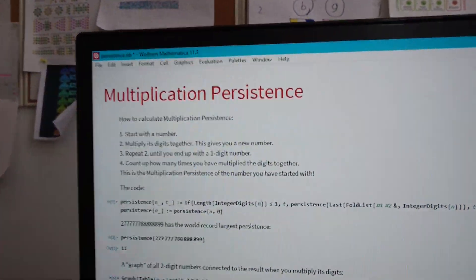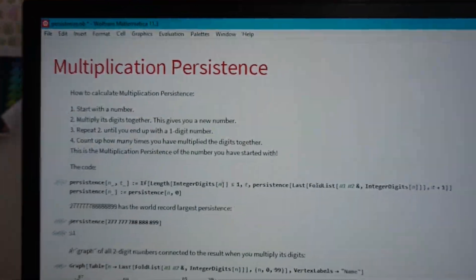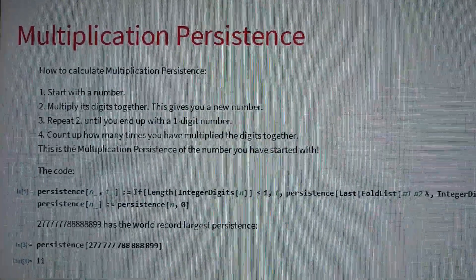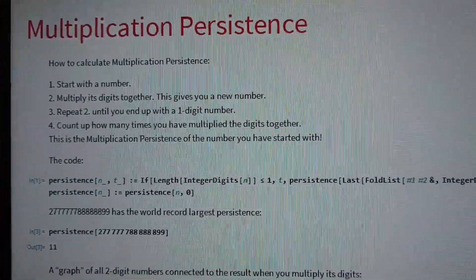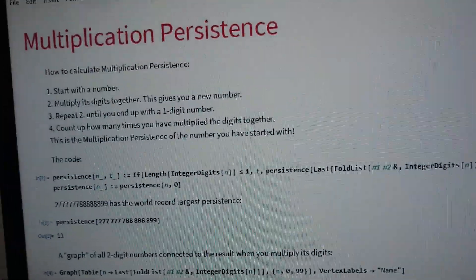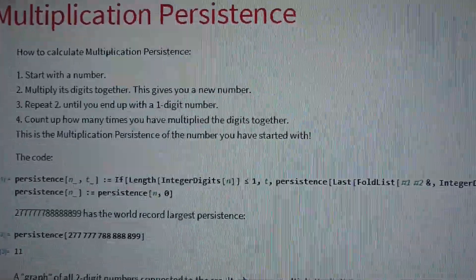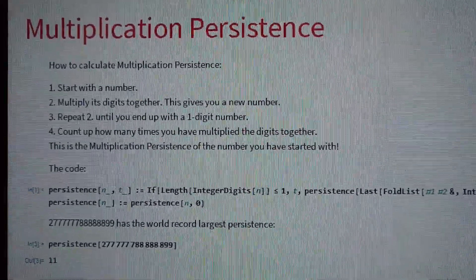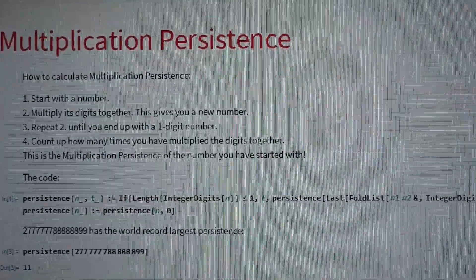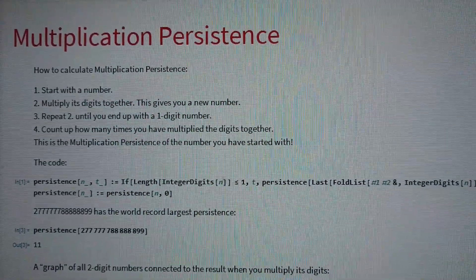I did this video because of a challenge that Matt Parker posed on Numberphile in a recent video. What was it about? It was about multiplication persistence. So how to calculate it, you start with a number, any number. Then you multiply its digits, and that will give you a new number. And then you repeat that step until you end up with a one-digit number, then you stop. Then you just count up how many times you multiply the digits together, and then you get multiplication persistence.